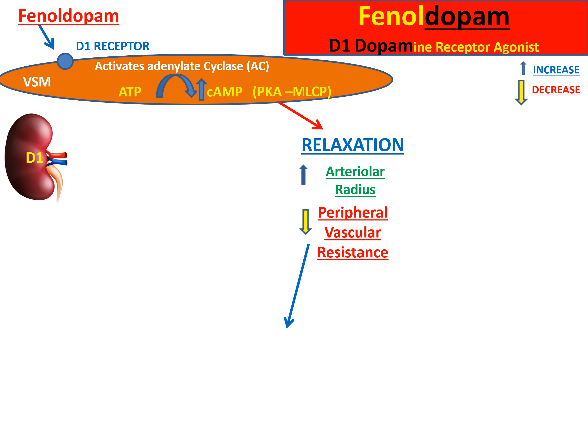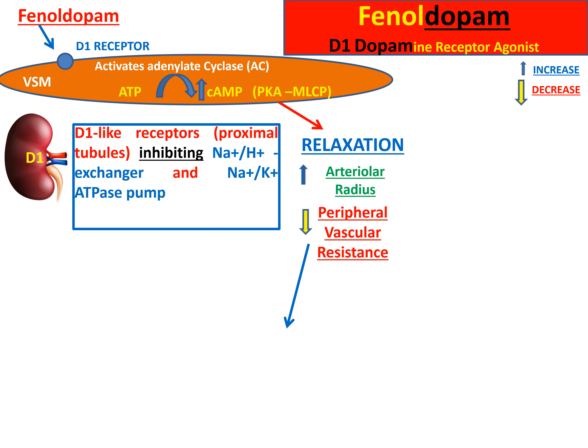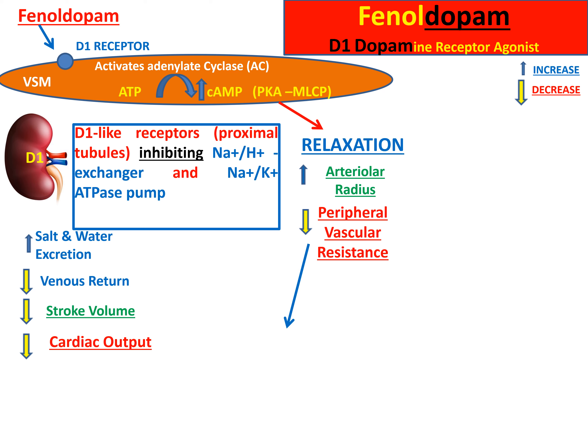Fenoldopam also acts on dopamine receptors in the kidney, specifically dopamine-1-like receptors in the proximal convoluted tubule cells. Stimulation of these receptors inhibits sodium reabsorption through two mechanisms: inhibition of the sodium-proton exchanger and inhibition of the sodium-potassium ATPase pump. This increases water and sodium excretion, decreasing cardiac output. The combined decrease in cardiac output and peripheral vascular resistance lowers blood pressure.